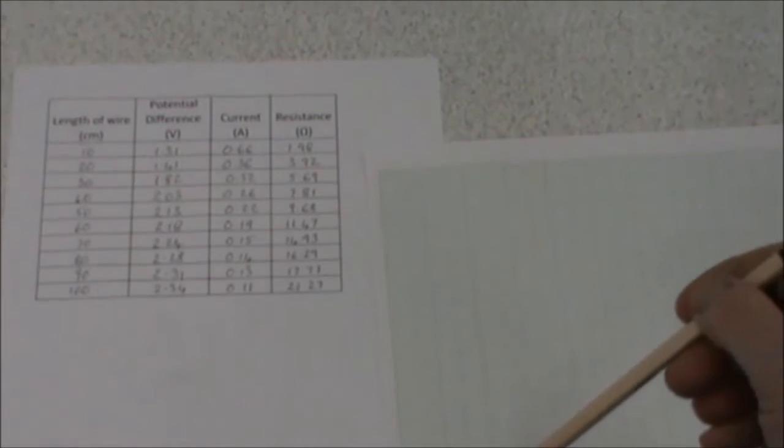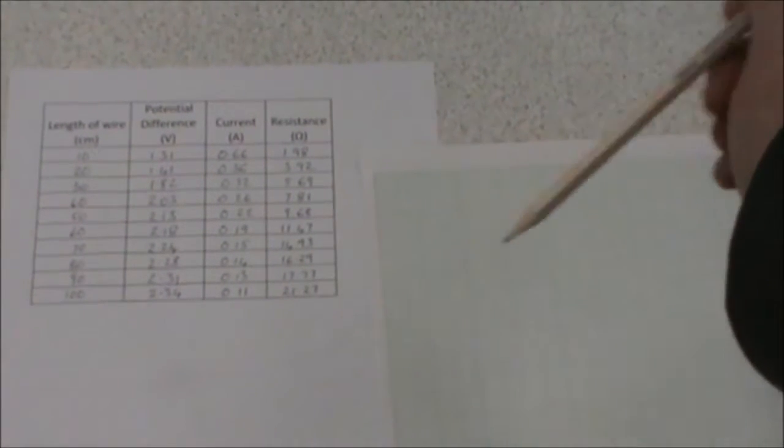We're now going to plot a graph of our results. Length is going to go on the x-axis, that's the horizontal one, and resistance is going to go on the y-axis, the vertical one.